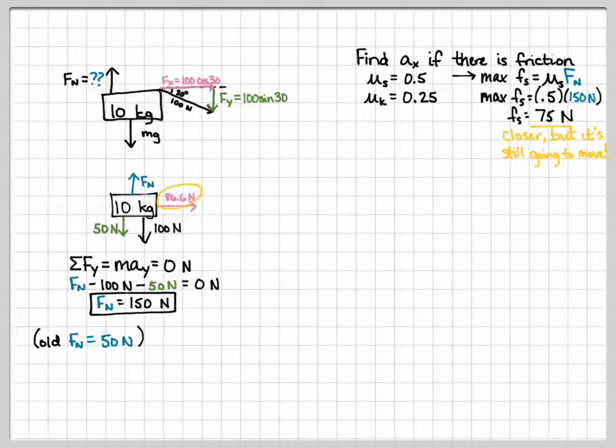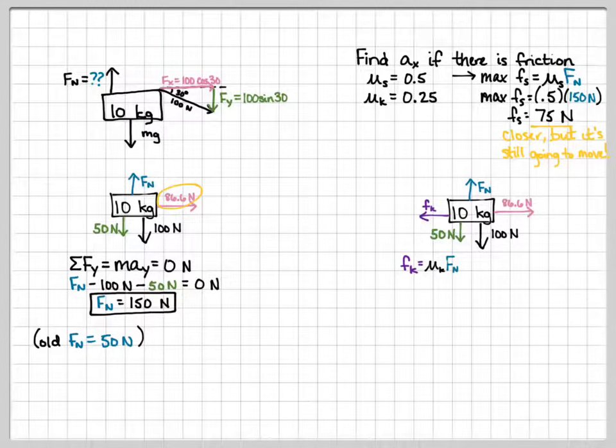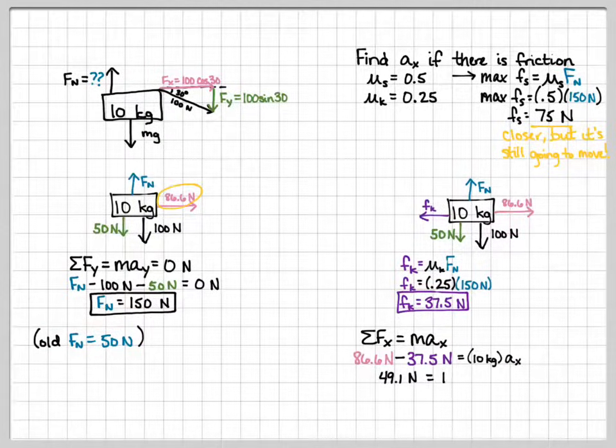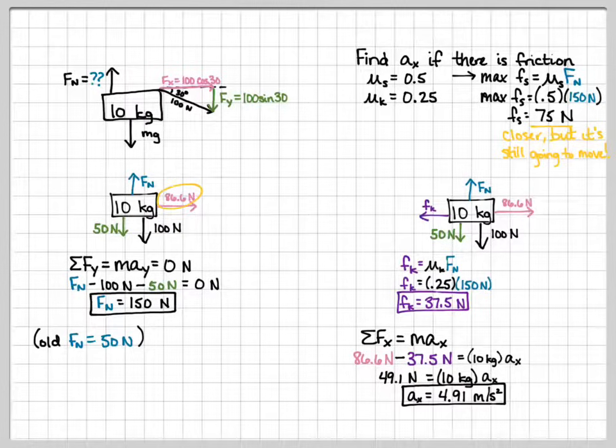So, we know that it's going to move, which means we have to worry about kinetic friction. Let's redraw our diagram with friction included. So, our kinetic friction is equal to mu kinetic times the normal force. The normal force for this one is going to be 150. So, 0.25 times 150, that is equal to 37.5 newtons. So, we know the magnitude of our two horizontal forces. We can do Newton's second law. 86.6 minus 37.5 is equal to 10 kilograms times the acceleration. Solving for A, we divide both sides by 10. We get acceleration is 4.91 meters per second squared. That's significantly less than what we found before. And that makes sense. Since we increased our normal force, we also increased our friction.